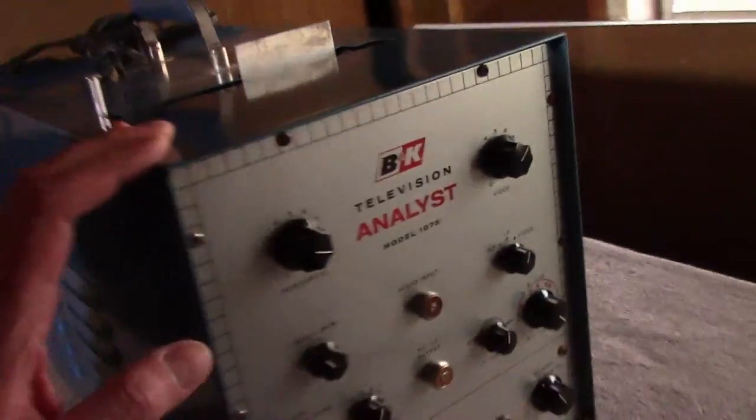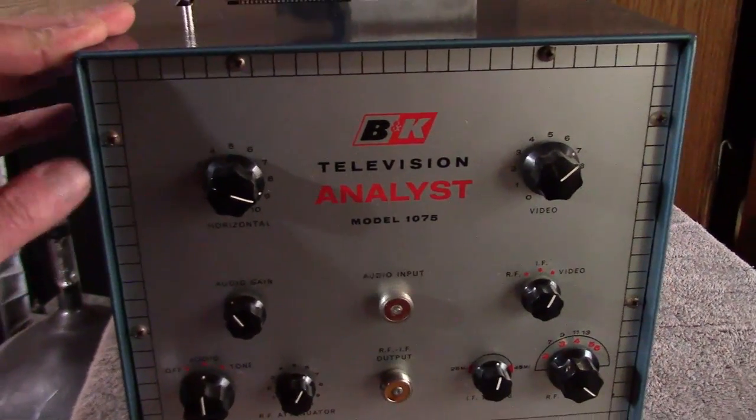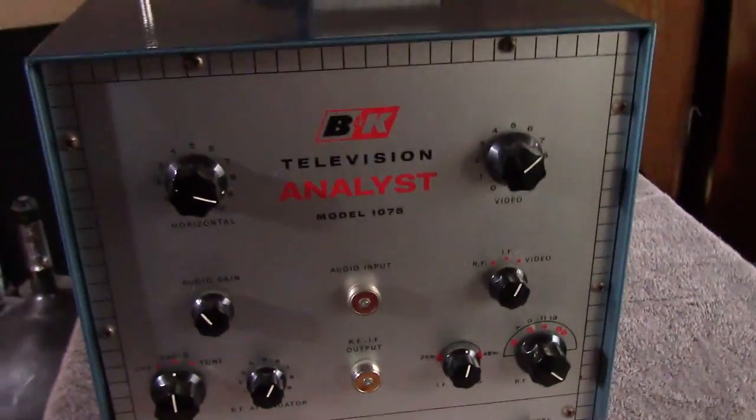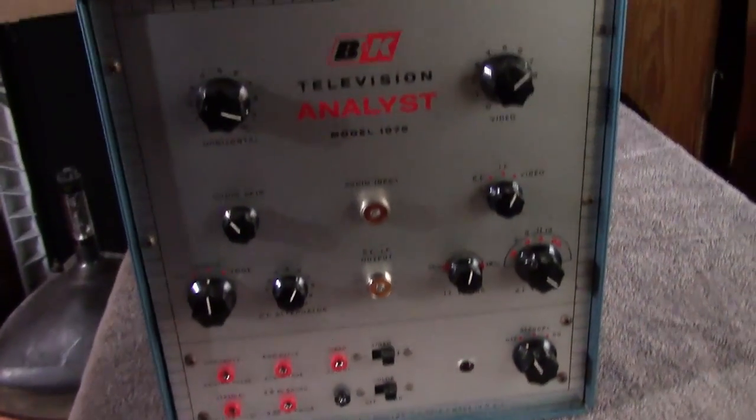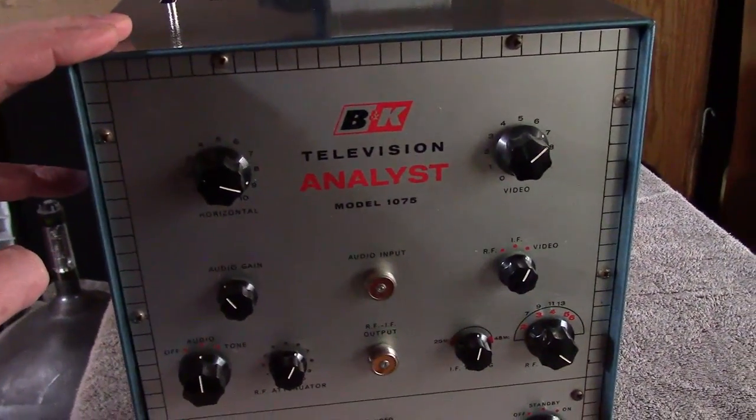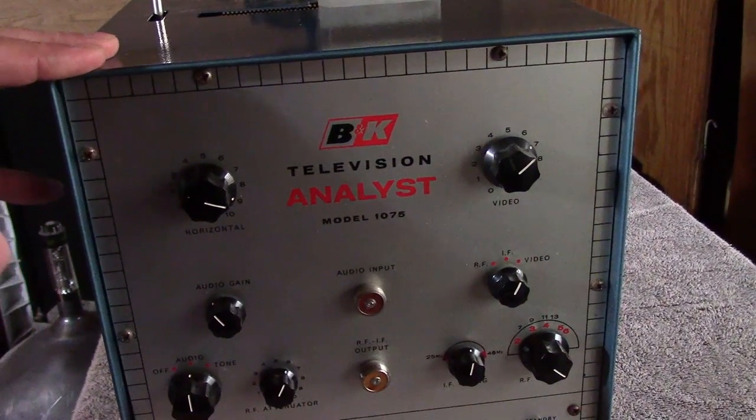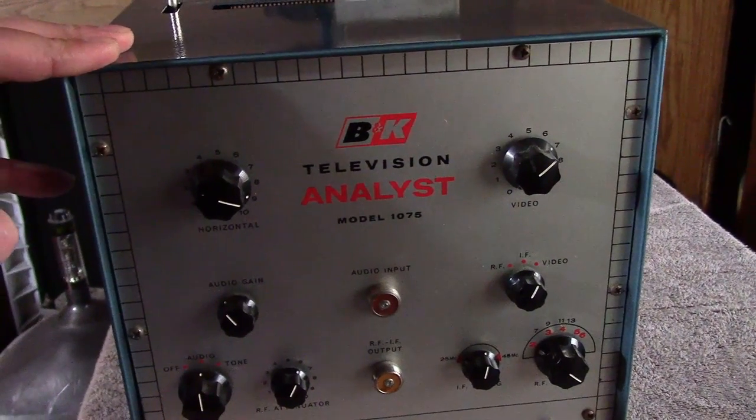What this is is a B&K Television Analyst. You may have seen me use my 1077B in a number of videos. Well, this is a much earlier version, it's a 1075. I think there was a 1074 and maybe a 1070.